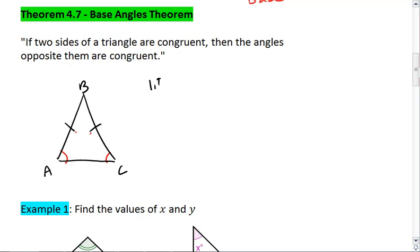So if AB is congruent to BC, then angle A is congruent to angle C.